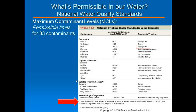One thing to notice: the action level for lead is 0.015 milligrams per liter, considered highly toxic. This is a bit of a funny one, because the action level for lead is related to the treatment of water to reduce lead to a safe level — but there is no actual MCL for lead.